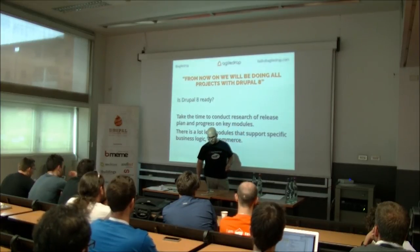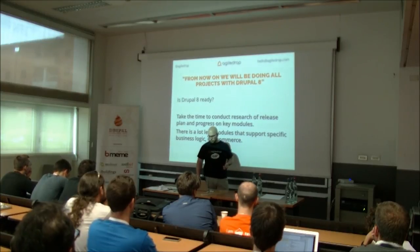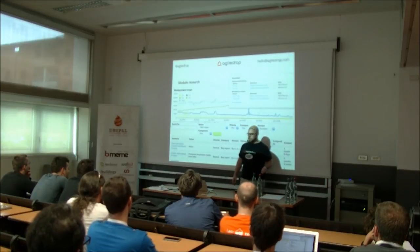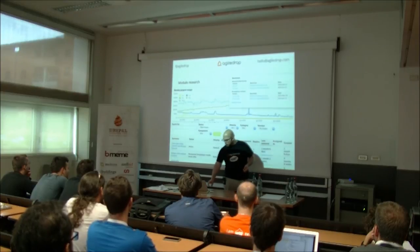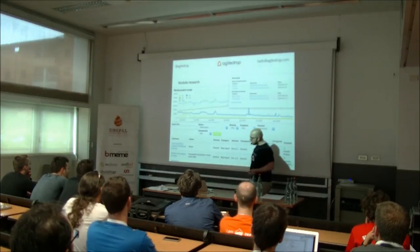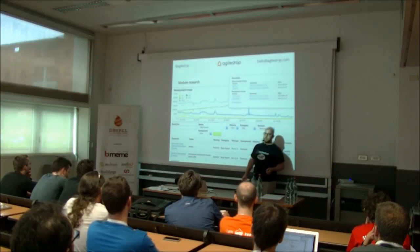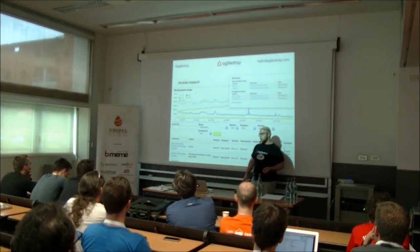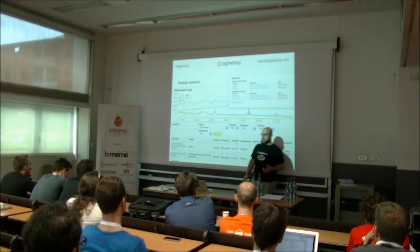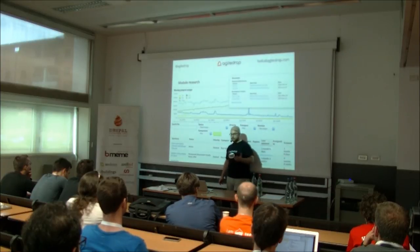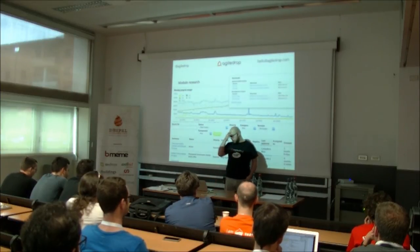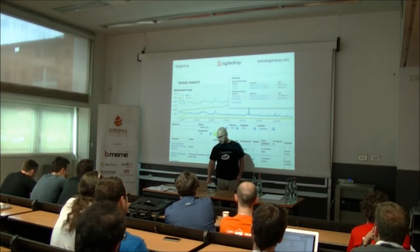Doing that research is actually pretty easy. Make a list of the things you need, find the modules, and look at their statistics. Those statistics will show you how far along the module is and how actively it's being used and developed. Check whether there's a stable release or only a development or alpha version. Look at the issue queue to see how regularly it gets updated. For some modules, even though they only have a development release, you can see that many people are actively working on it and you can use it in production, knowing it will be stable in a couple of months.